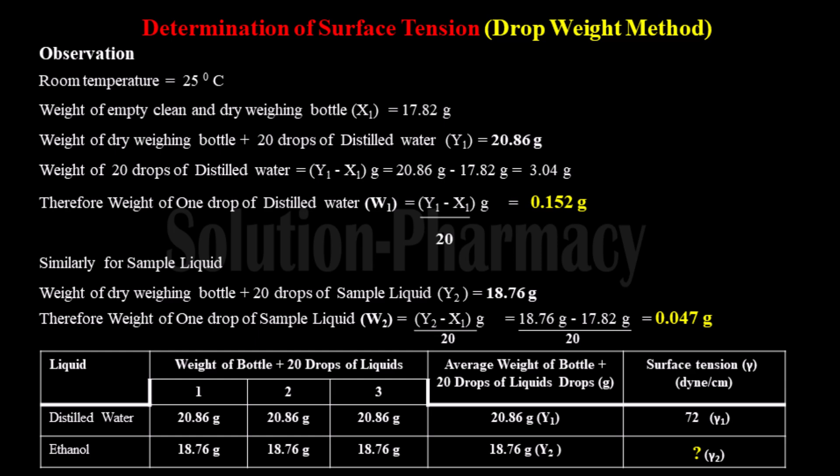Here we have taken three readings, so to calculate the average we add all three readings and divide by three. Similarly, calculate the average weight of 20 drops of distilled water with the weighing bottle by adding the values of all readings and dividing by the number of readings.